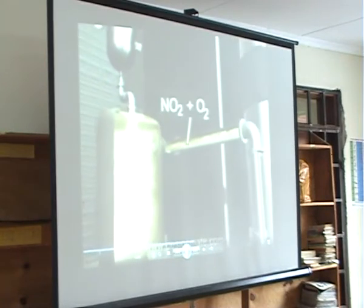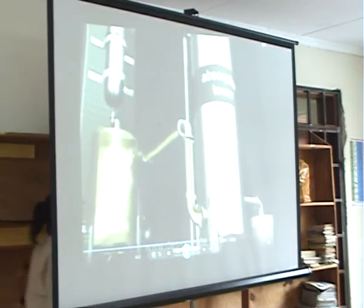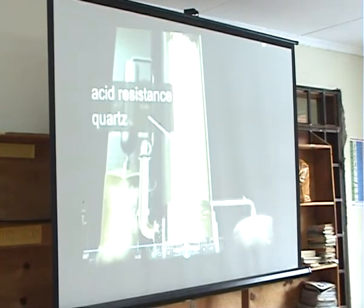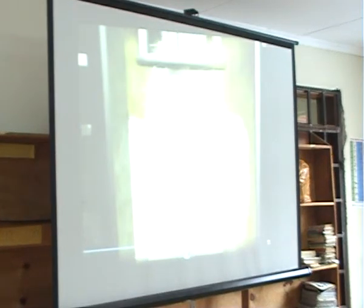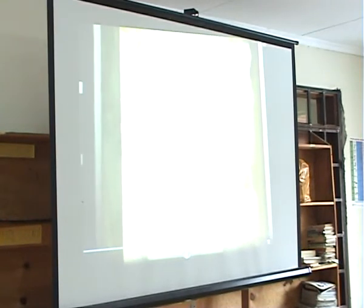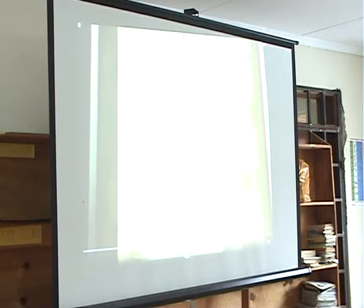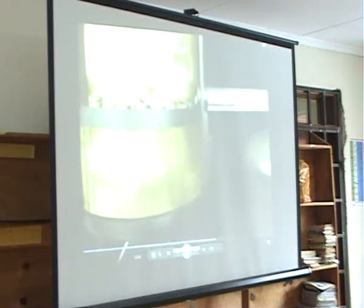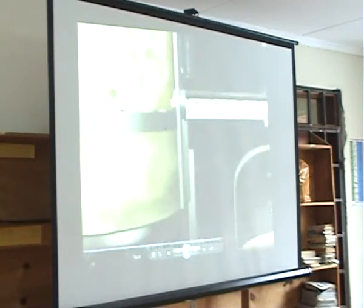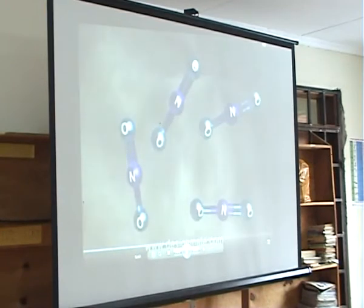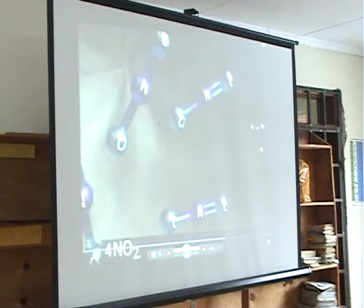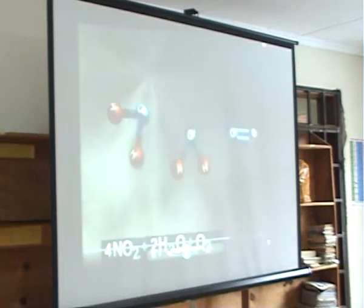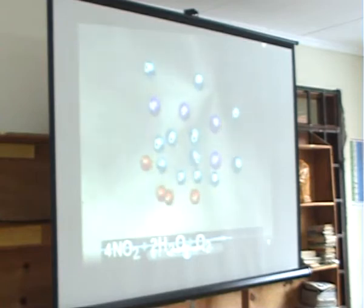This nitrogen dioxide and non-reactive oxygen then flows into the absorption tower, which is a stainless steel tower packed with acid-resistant quartz. Here, water is sprinkled from the top, so it slowly trickles through the layer of quartz. The water dissolves with nitrogen dioxide and non-reactive oxygen to give dilute nitric acid.